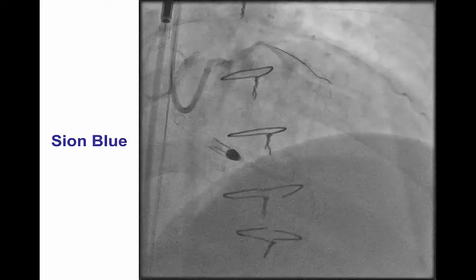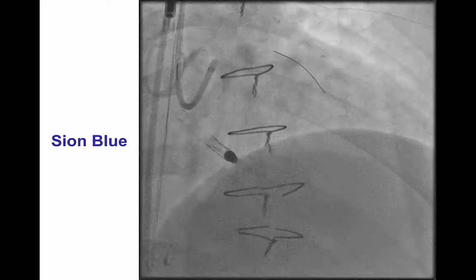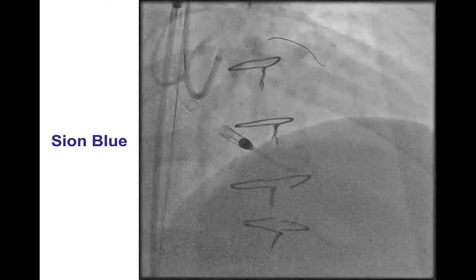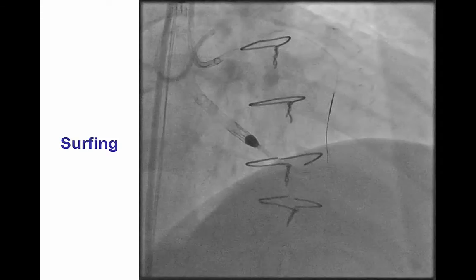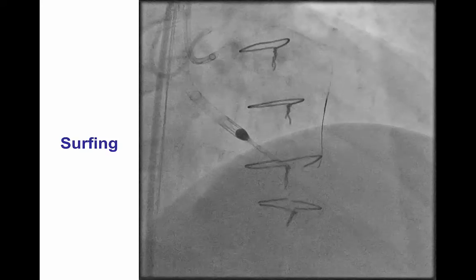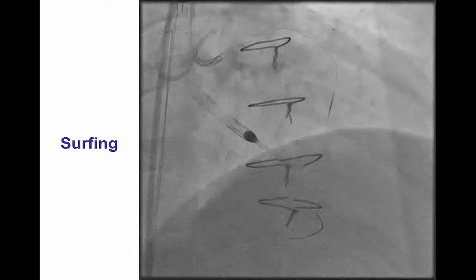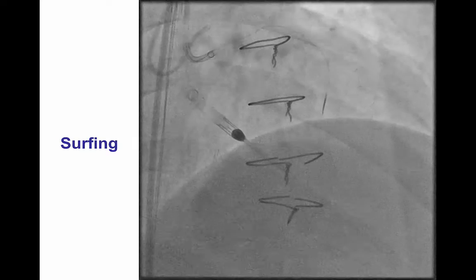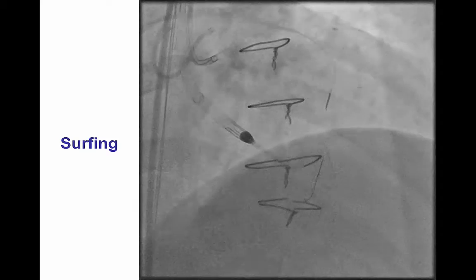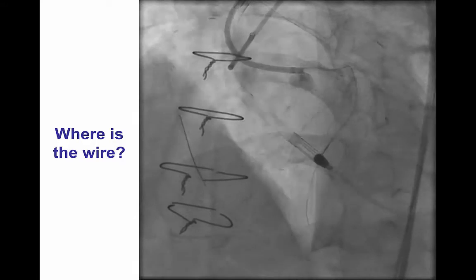A workhorse cyan blue wire was advanced into a septal branch and then followed by a Corsair catheter. We performed surfing with a cyan wire and were then able to advance into the posterior descending artery, as confirmed by angiography.